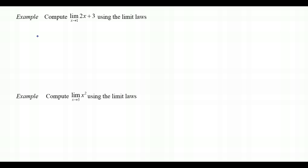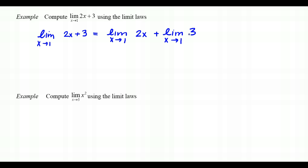Recognizing we have the sum of two functions, we apply the Sum Law and rewrite this as the limit as x approaches 1 of 2x plus the limit as x approaches 1 of 3. For the first limit, 2 is a constant in front of the function x, so by the Constant Multiple Law we pull the 2 out front, giving 2 times the limit as x approaches 1 of x.